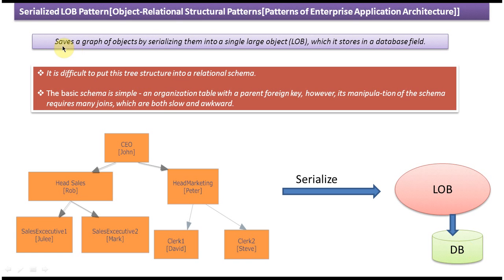Now if you read this sentence, you will understand. This is called serialized LOB pattern that saves a graph of objects by serializing them into a single large object, which stores in a database field. So this graph of objects is serialized into a single large object and then stored into the database field.